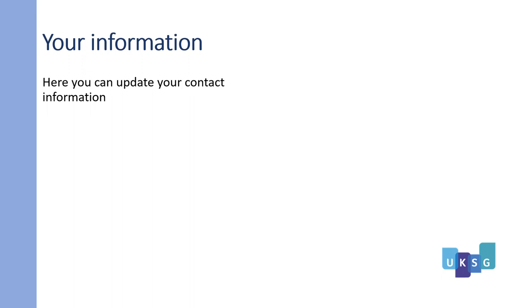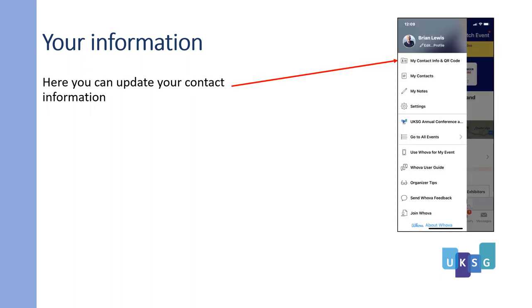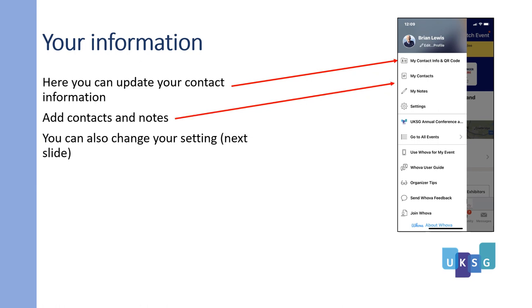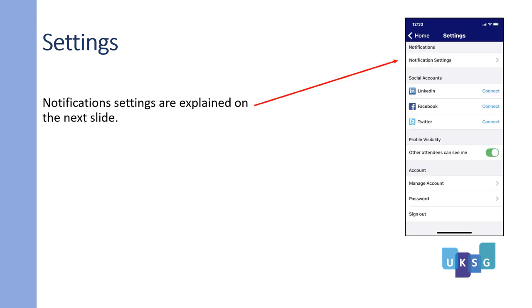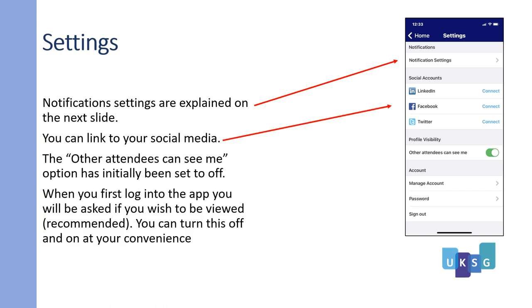Your information. Here you can update your contact information, add contacts and notes, and also change your settings. Your settings: notification settings are explained in more detail on the next slide. You can link to your social media. The 'other attendees can see me' option has been initially set off. When you first log into the app you will be asked if you wish to be viewed — we recommend you do this. You can turn this off and on at your convenience.